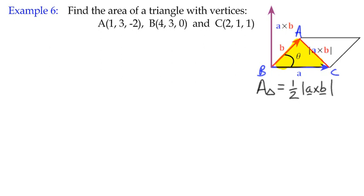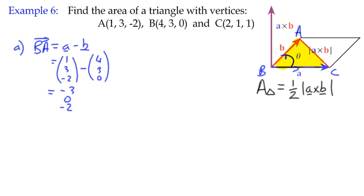So the first thing I'm going to do is work out vectors BA and BC. Vector BA is position vector A minus B, which is (1, 3, -2) minus (4, 3, 0), which gives us (-3, 0, -2).